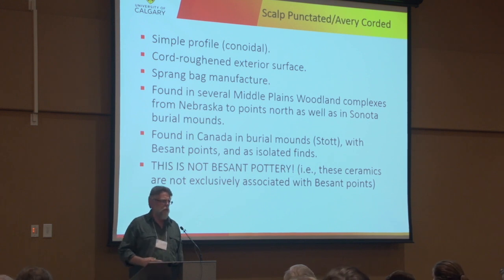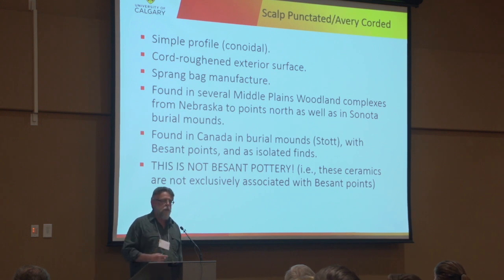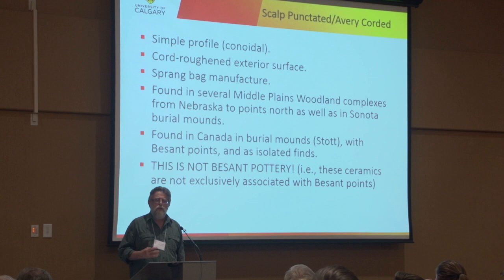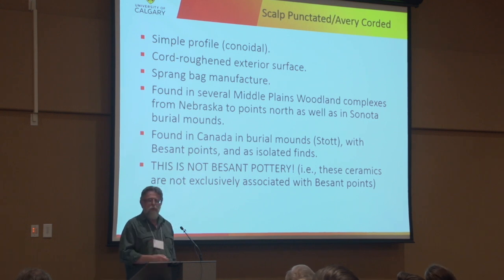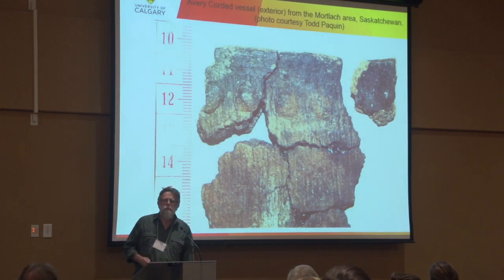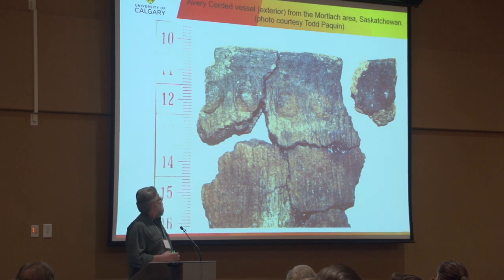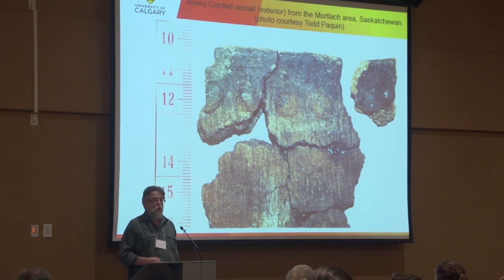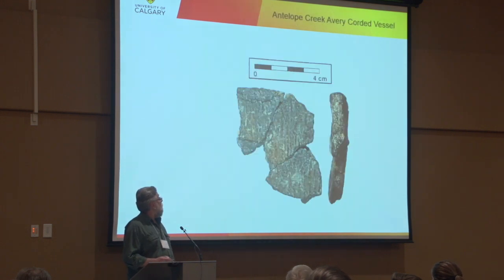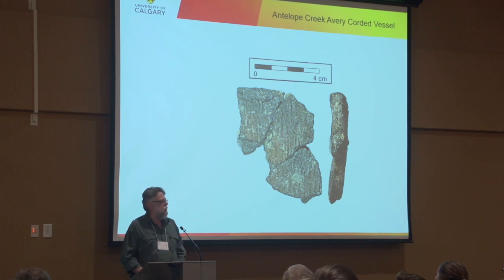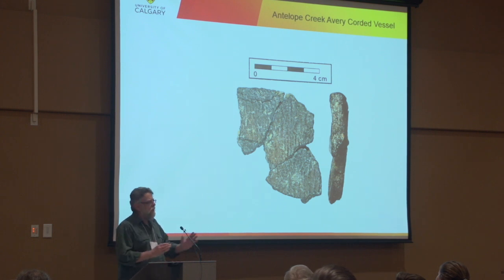I think we need to consider external influences on these potteries by recognizing the names they were called much earlier on. I might think about Avery Corded, because one of the founders of our department, Scotty McNeish, identified this pottery in Manitoba as Avery Corded. I can't decide if I'm just a strong Canadian nationalist or if I'll just go with the prior publication rule. This is what it looks like — it's not pretty. Simple profile pottery with probably sprang weave, bag-made, interior punctates, and exterior bosses as a rule. There's also a vessel from Antelope Creek, very near the Alberta border, that's probably also Scalp Punctated, though it doesn't have punctates. Many of these ceramics aren't quite in Alberta, but they're pretty close, so they're probably present in Alberta at some point.